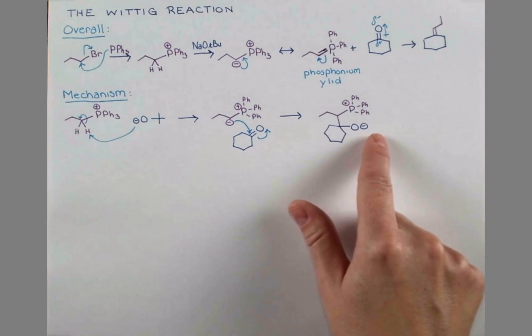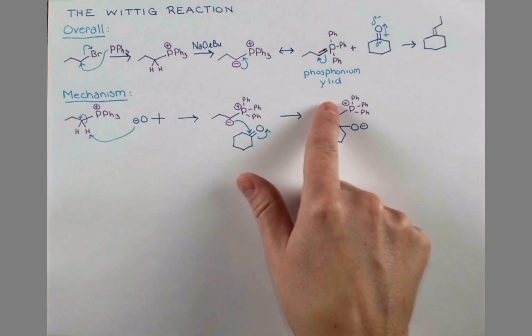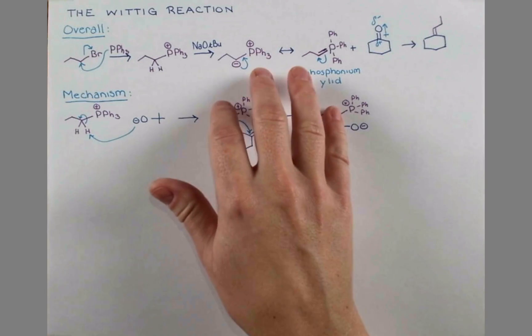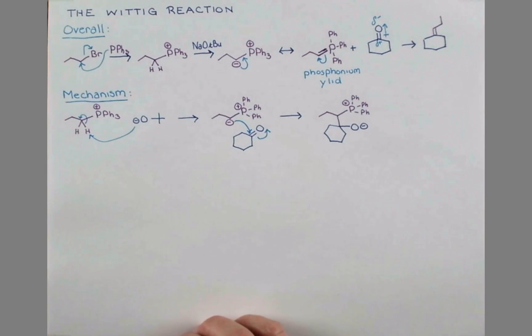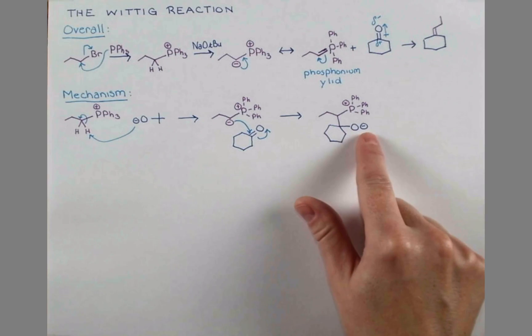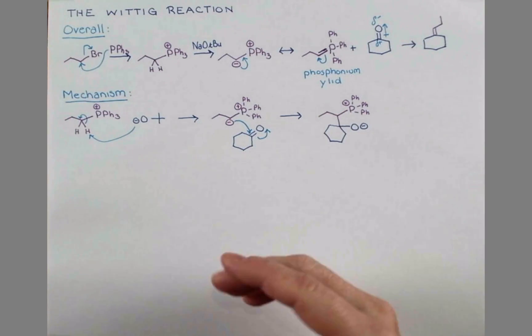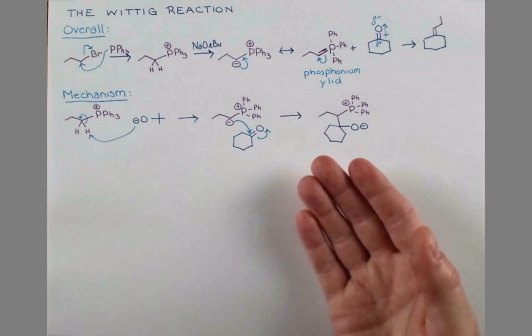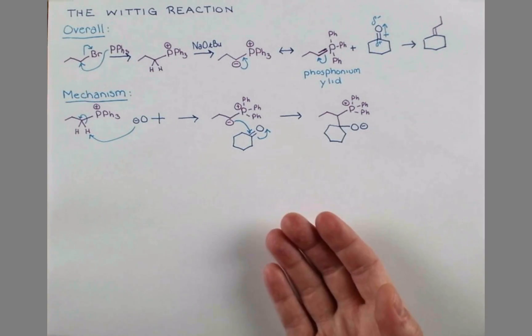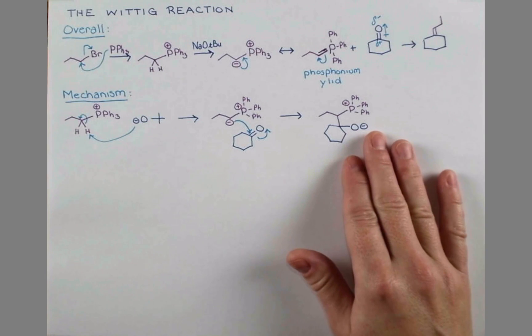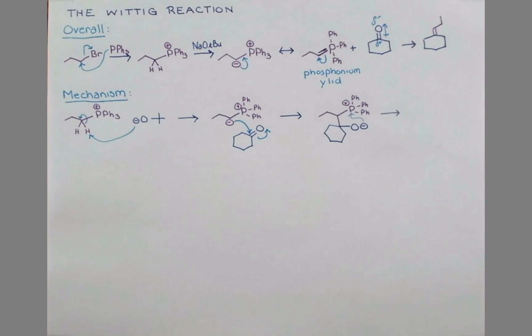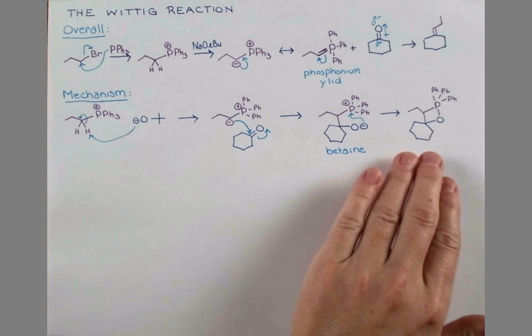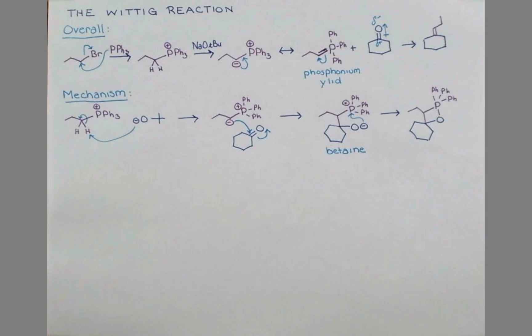But if we think about this, we just have a negative here and a positive here. There's an electrostatic attraction. And if oxygen makes two bonds, if it shares the electrons, it'll be neutral. And if phosphorus accepts a pair of electrons and makes five bonds, it will be neutral. So now we can show the electrons from the oxygen attacking at phosphorus. This is going to make a four-membered ring. And this four-membered ring intermediate is called an oxaphosphetane.